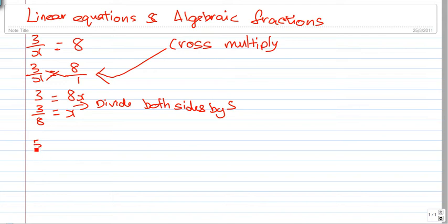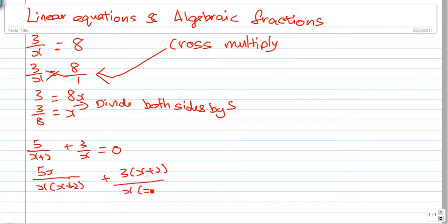Say we have 5 over x plus 2 plus 3 over x equals to 0. In a situation like that, the only thing we can do is, we've got 2 algebraic fractions, can we express it as a single fraction? So, what we'll get is 5x over x times (x plus 2) plus 3 times (x plus 2) over x times (x plus 2).